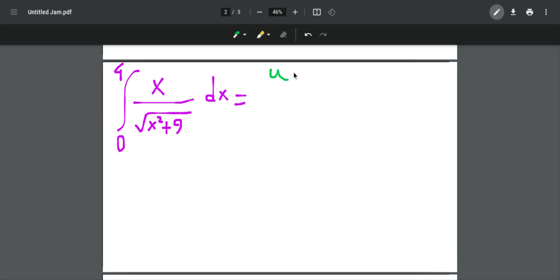First of all, I'm going to use a u-substitution. I'm going to let u equal the inside of the square root in the denominator, which is x squared plus 9.